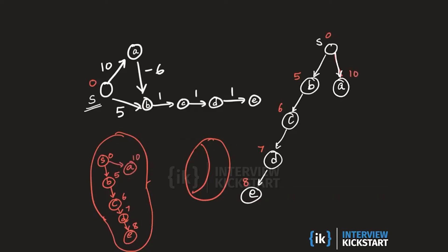We pull a out of the priority queue and add it to the shortest path tree. When we look at a's outgoing neighbors we see b. Now b is already captured, but notice that if we followed the negative weight edge of weight minus 6, we could reach b using a total path length of 10 minus 6, which is 4.